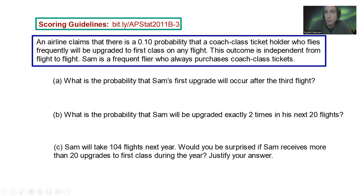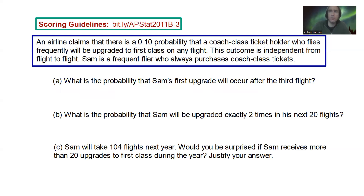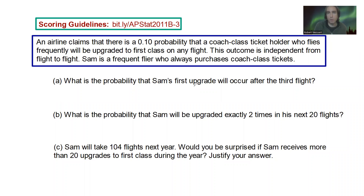Sam is a frequent flyer who always purchases coach class tickets. Part A: what is the probability that Sam's first upgrade will occur after the third flight? If you look at the way that it's stated, it says what's the probability that Sam's first upgrade will occur after the third flight?